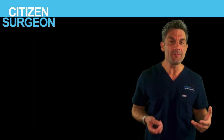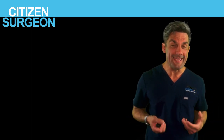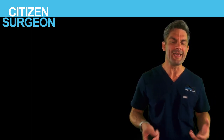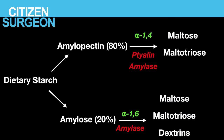Dietary starch is about 50% of the carbohydrate we take in every day. Starch is either amylopectin (80%) or amylose (20%). We can't absorb either directly, so we have to break them down. Amylase breaks down amylopectin at the alpha-1,4 bond to create maltose and maltotriose. Amylose is broken down at the alpha-1,6 bond by amylase to create maltose, maltotriose, and dextrins.